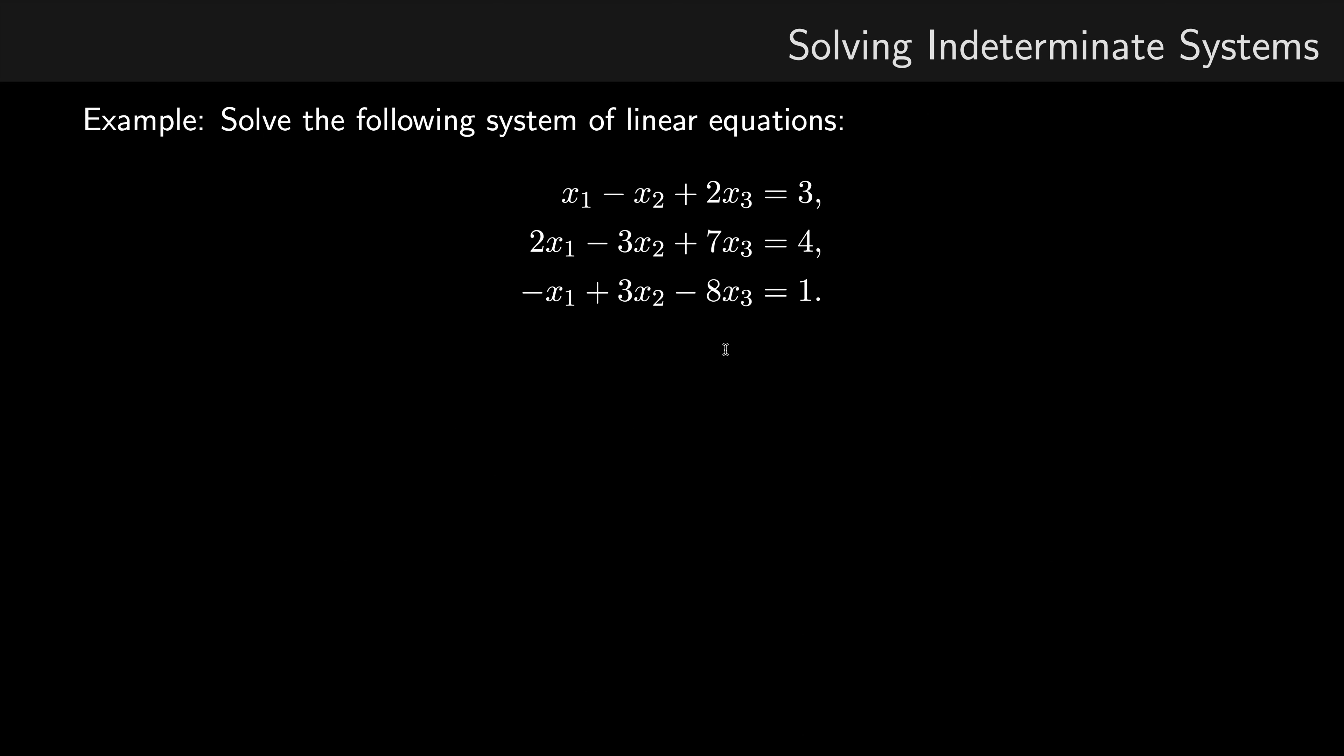So here we have a system of linear equations, and I'm going to solve this using Gaussian elimination. We form the augmented matrix, we use elementary row operations to reduce to row echelon form. If you're not sure what I did here, I suggest you go and have a look at that video on Gaussian elimination.